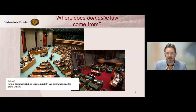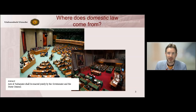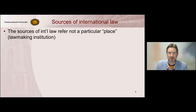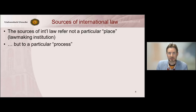If we first look to the domestic level, we see that it is quite clear where domestic law comes from. An act of parliament is made by the government together with the states generals, so the two chambers. In international law, we focus not so much on the place or institution, but rather on the process. We identify certain processes of affirmative decision making, the products of which create legally binding obligations.